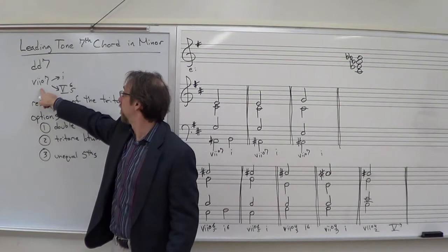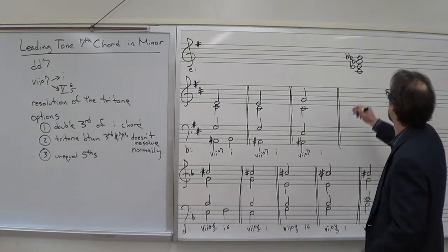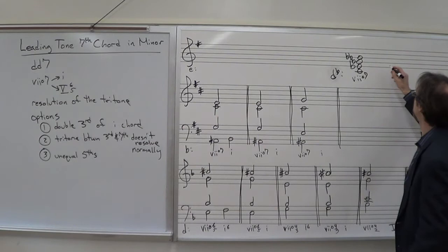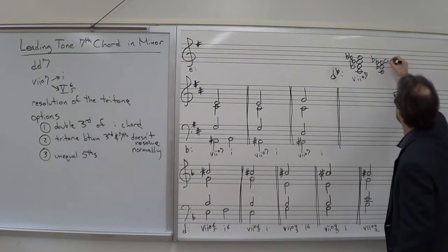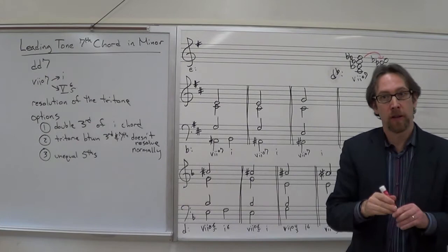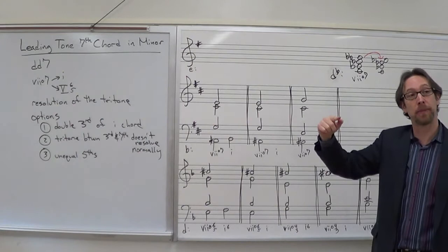The chord typically resolves to the one chord in root position, or moves to a five-six-five. In the key of D-flat minor, our seven diminished seventh chord would be spelled with C in the bass, E-flat, G-flat, and A-flat for the five-six-five. The only note that changes when moving from the seven diminished seventh to the five-six-five is that the B-double-flat moves down a half step to an A-flat.